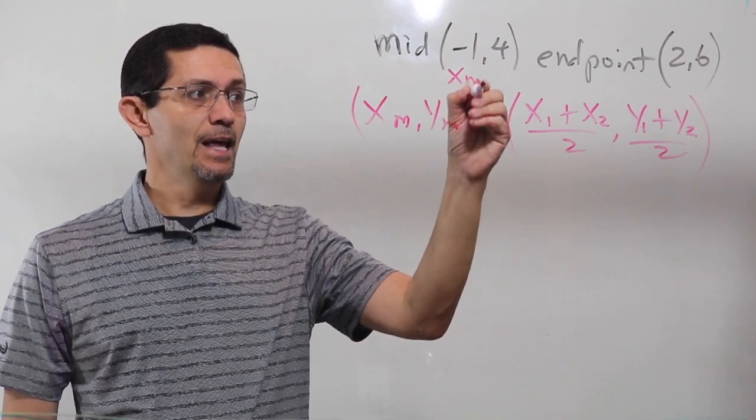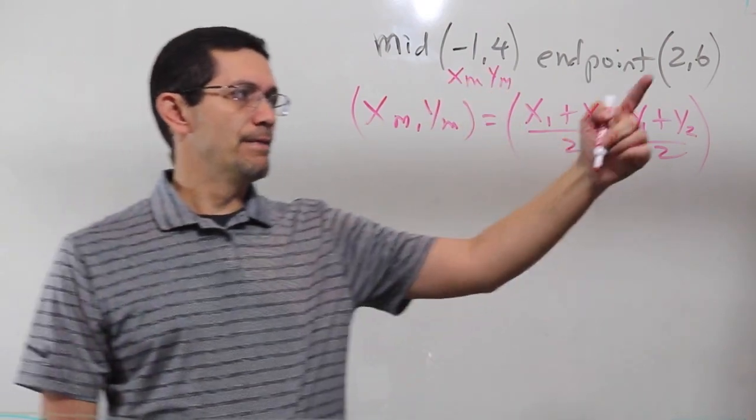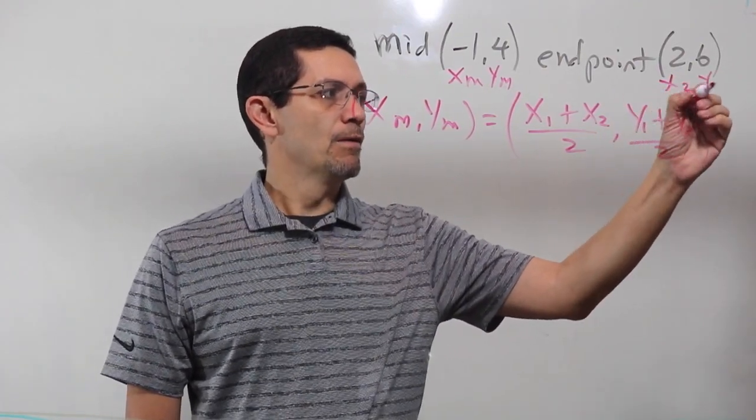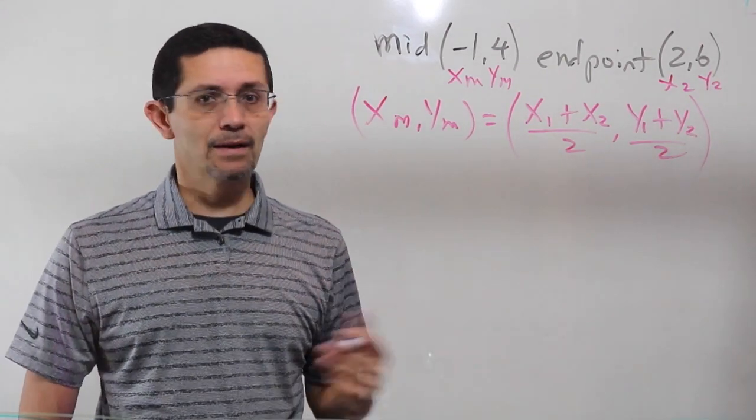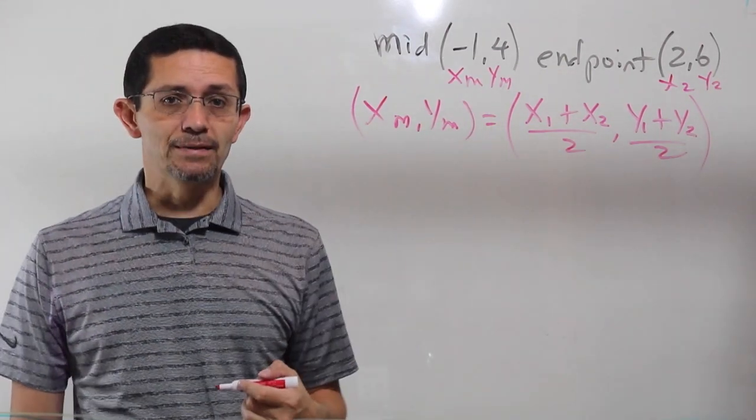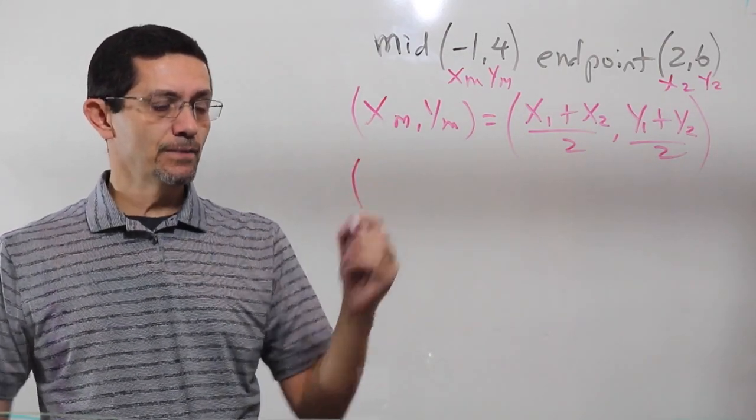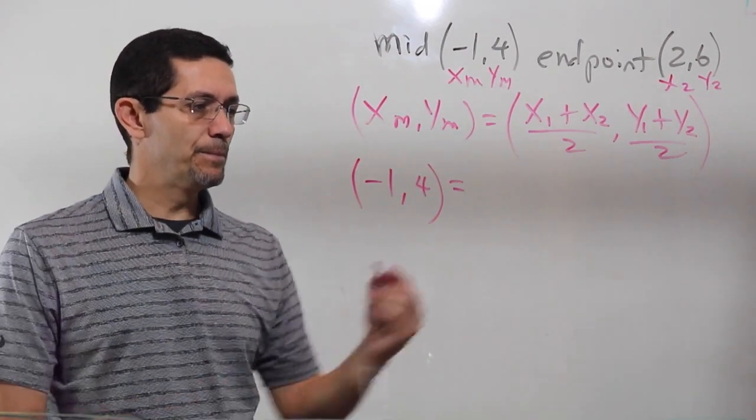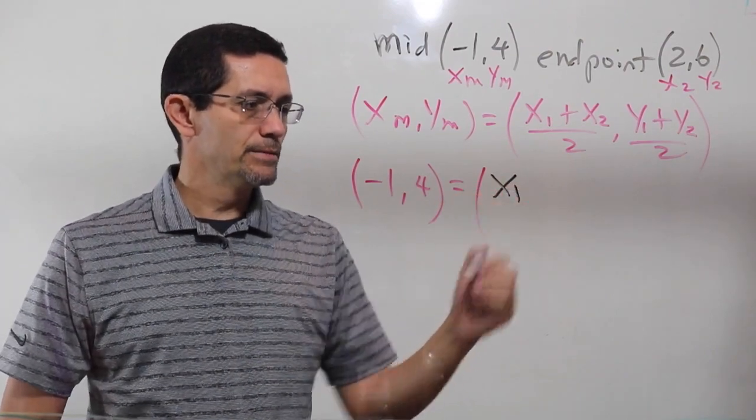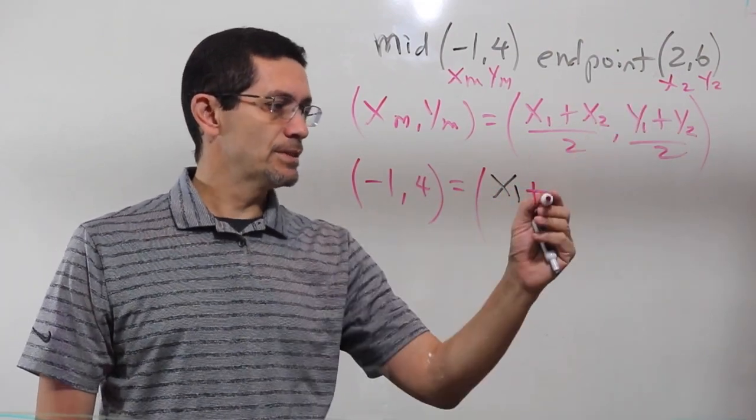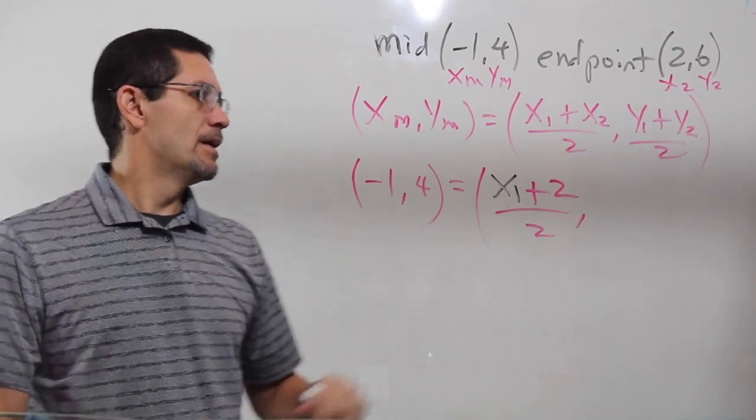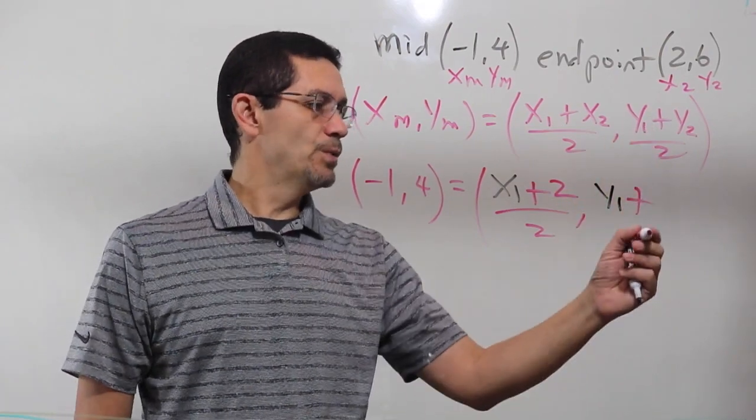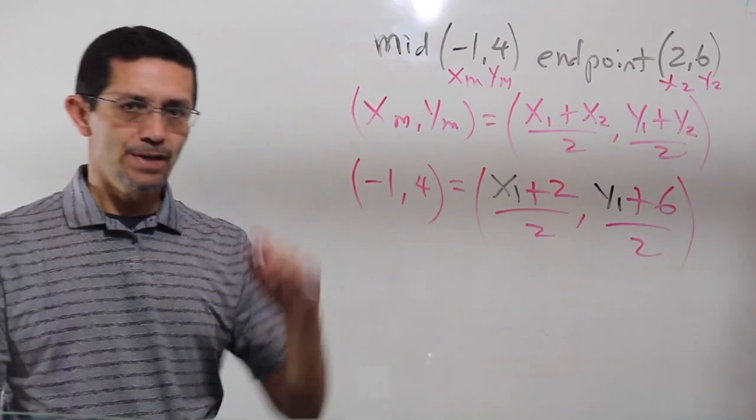Now, I need to label those. This is my midpoint. So, this is xm, ym. That's the whole trick. And this could be x1, y1, or x2, y2. It does not matter. I'm going to call it x2, y2. It could be x1, y1. It does not matter at all. Now it doesn't matter. We're just replacing. So, let's plug it back in. So, here, I'll have negative 1, comma 4 equals, and in the other side, it's going to be parentheses, x1, plus x2, which in this case is 2, divided by 2, comma, and then y1, which I have no idea how much it is, plus y2, which is 6, divided by 2. So, this is the whole trick.